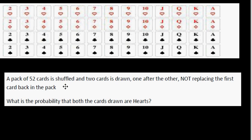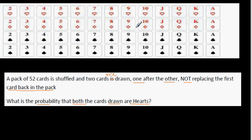A pack of 52 cards is shuffled and two cards are drawn one after the other, not replacing the first card back in. What is the probability that both the cards drawn are hearts? You've got 13 hearts, 13 diamonds, 13 clubs, and 13 spades. You want to find the probability that both cards are hearts.